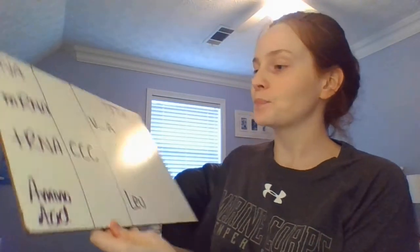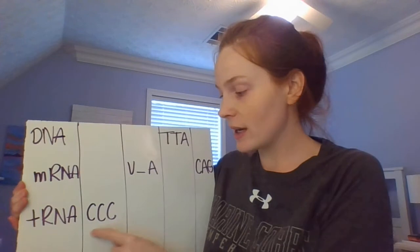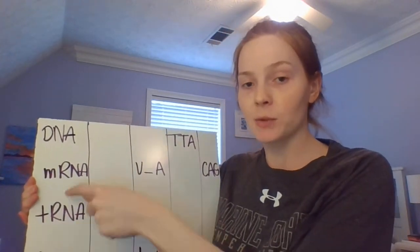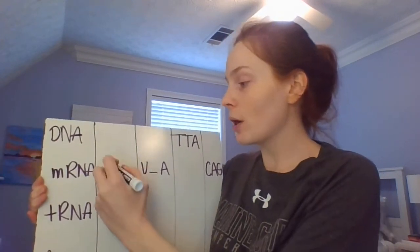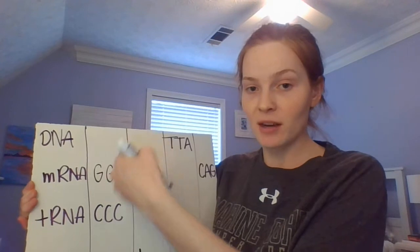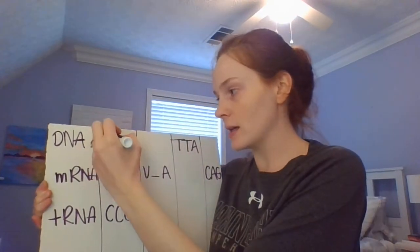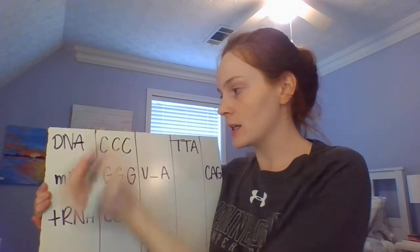The tRNA has an anticodon — this is the anticodon. Remember the anticodon on tRNA binds with the codon on mRNA, so we know that they have to match. Therefore we know our mRNA is G, G, G. mRNA is made from the DNA so they're going to pair as well, so we know DNA is C, C, C — because C pairs with G.